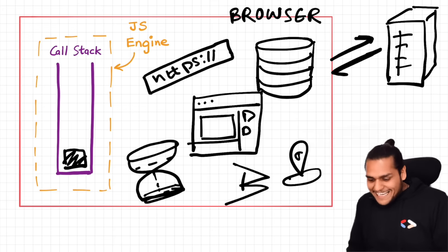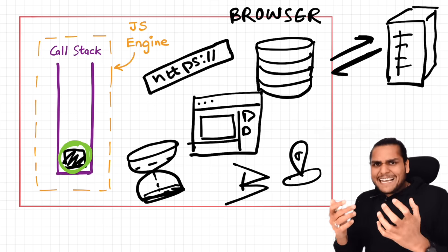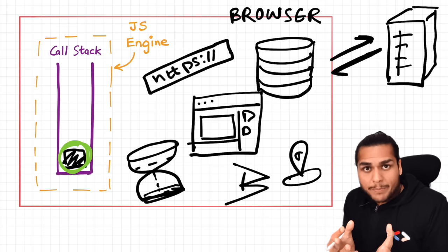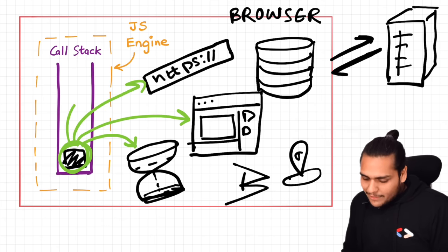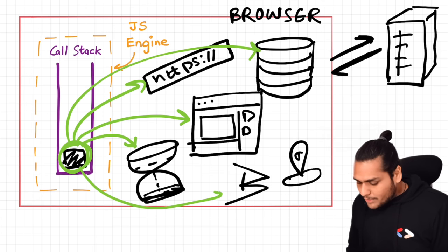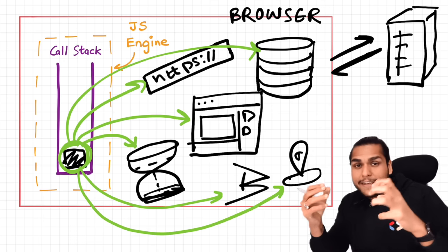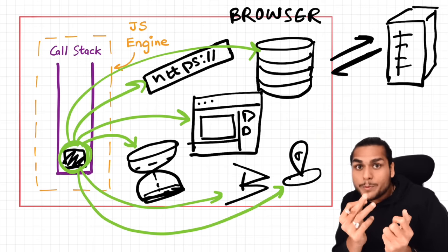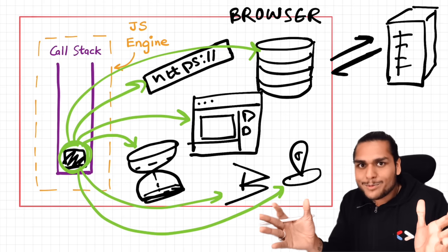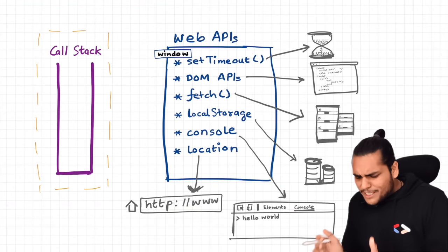Now suppose in our JavaScript code, which is running inside this call stack, we need access to these superpowers of the browser — suppose we need access to the timer, the rendered page, the URL, local storage, Bluetooth, all these superpowers. The JS engine needs some way to access those superpowers. As we move to the next slide, let us welcome the web APIs.